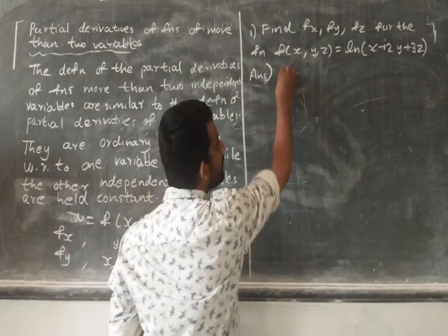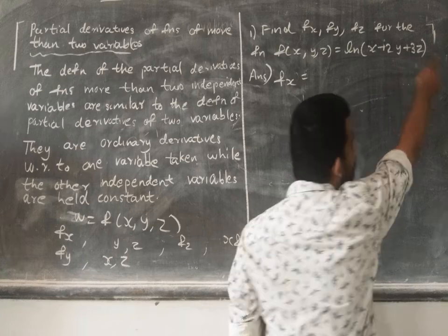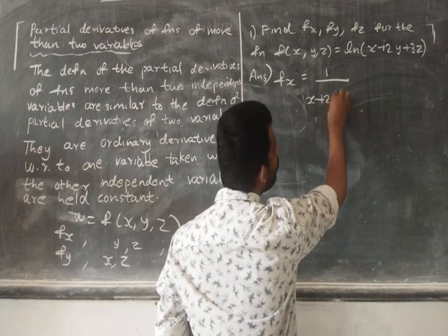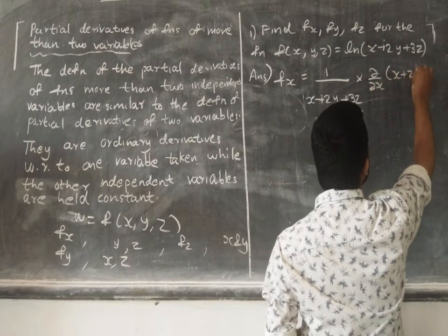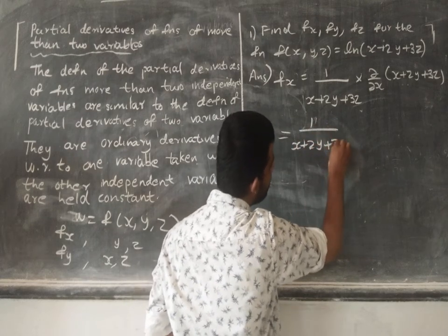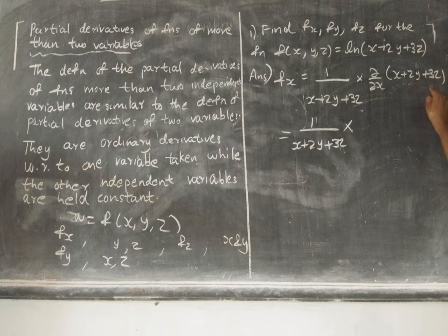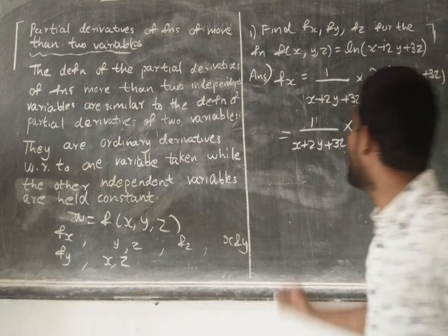Now f_x is equal to the partial derivative of f with respect to x, holding y and z constant. Using the ln derivative rule: 1 divided by (x + 2y + 3z), multiplied by the partial derivative of (x + 2y + 3z) with respect to x. Since y and z are constant, 2y and 3z are constant, and the partial derivative of x with respect to x equals 1.